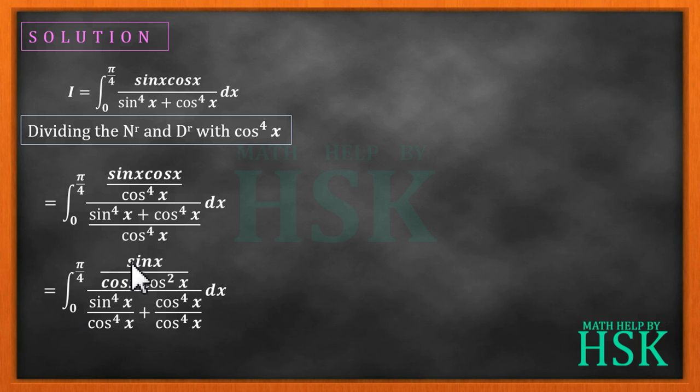This will equal sin x as is, cos x has been cancelled, and cos cube x is written as cos x times cos square x. This cos power 4x is divided separately, so this can be further solved as tan x times sec square x.